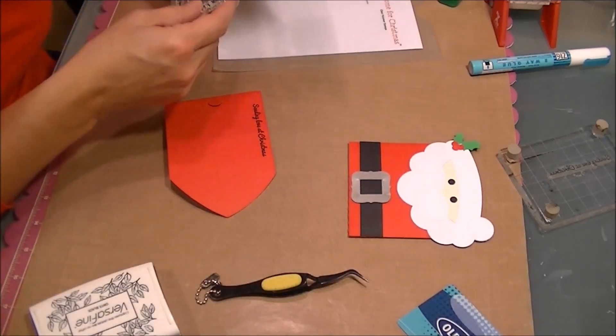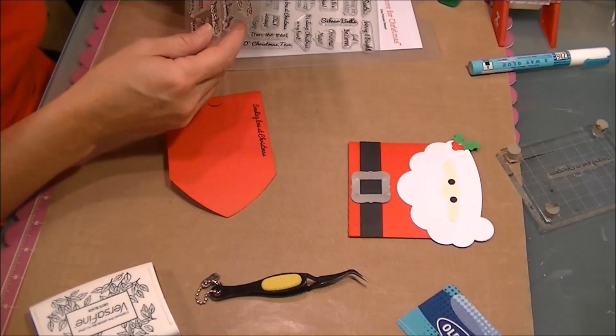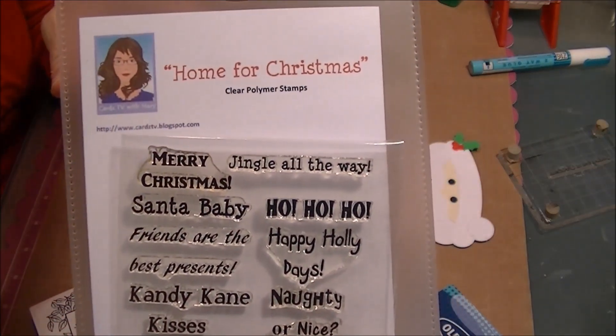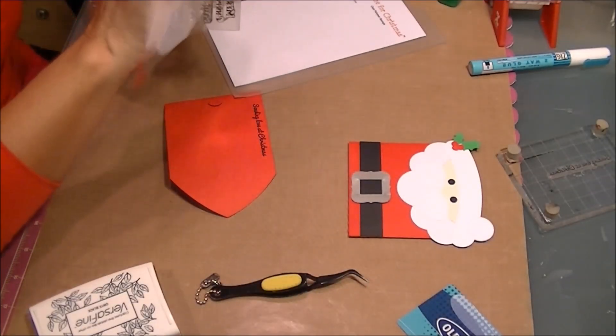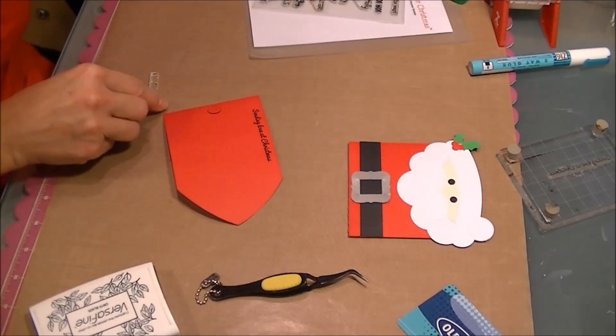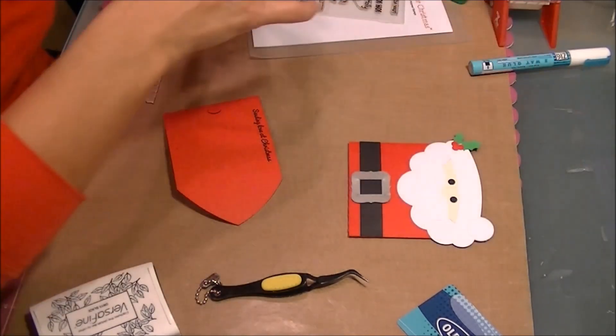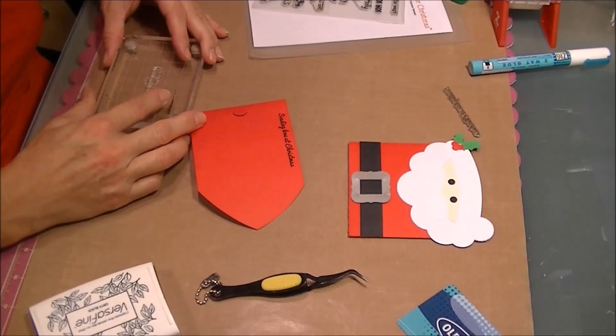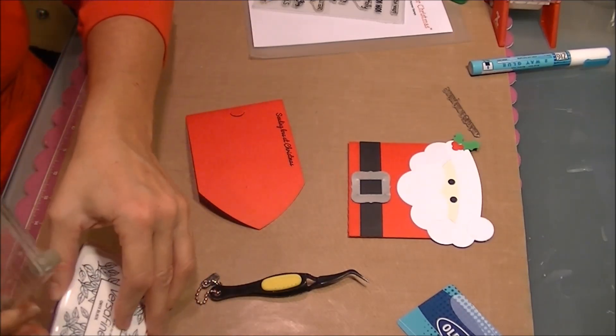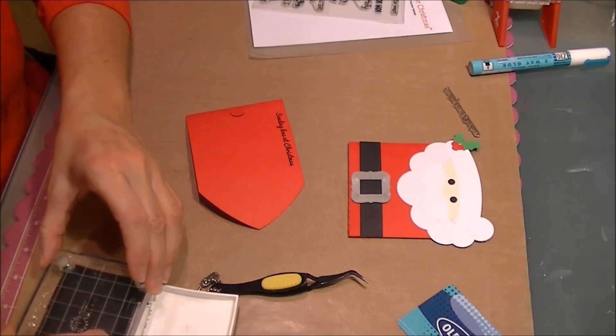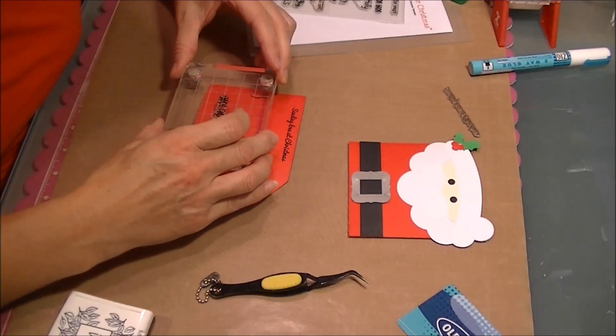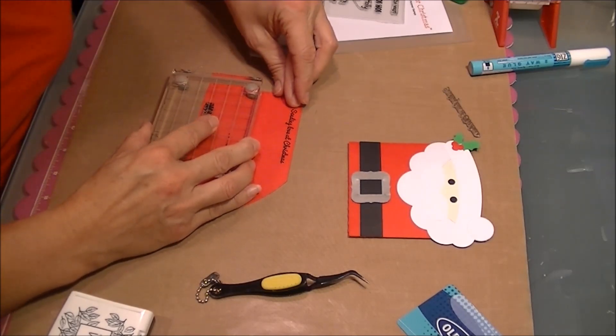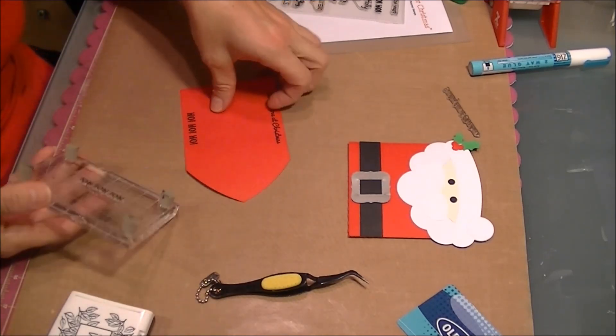I also wanted to use Ho Ho Ho from the Home for Christmas set. Set that right down there. Pull off my other one. I'm going to clean that later. Get our ink. And put that right down at the bottom. There's the Ho Ho Ho.